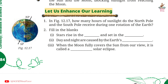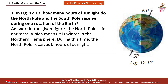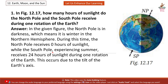Question 1. In Figure 12.17, how many hours of sunlight do the North Pole and the South Pole receive during one rotation of the Earth? Answer: In the given figure, the North Pole is in darkness, which means it is winter in the Northern Hemisphere. During this time, the North Pole receives 0 hours of sunlight, while the South Pole experiencing summer receives 24 hours of sunlight during one rotation of the Earth. This occurs due to the tilt of the Earth's axis.